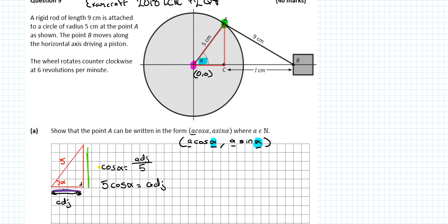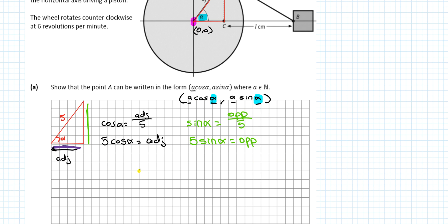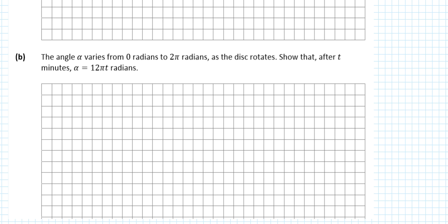And if we consider this as the opposite, what links the opposite and the hypotenuse? Sinα equals opposite over 5, so 5sinα equals the opposite. So we're writing the point A equals 5cosα, 5sinα. A weird question to be honest.